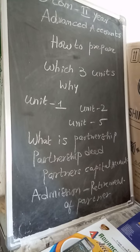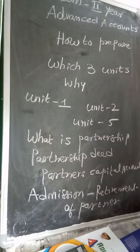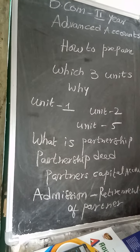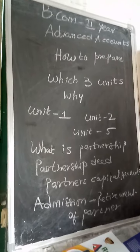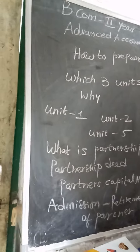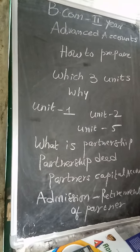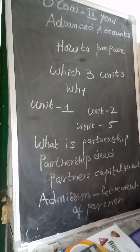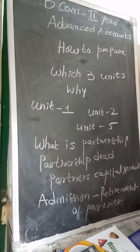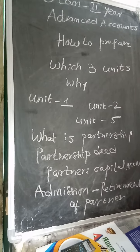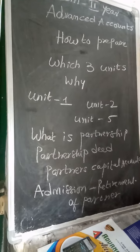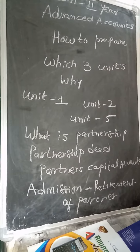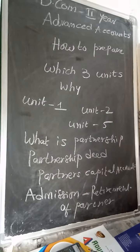There are two kinds of partner capital accounts: fixed capital and fluctuating capital. If the capital brought in by the partner at the beginning of the year remains the same, that is fixed capital. In case of fixed capital, for making all adjustments we prepare partners' current accounts. In case of fluctuating capital, all adjustments are made in the capital accounts themselves.